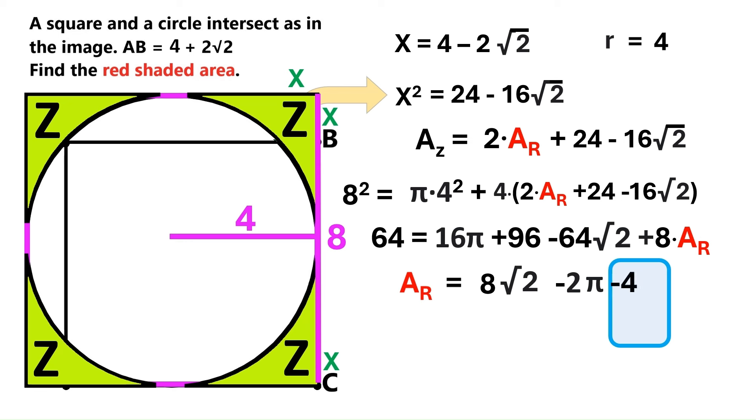It's very good, right? Thanks a lot, son. So it turns out that the area of the red region is 8 times root 2 minus 2 pi minus 4.